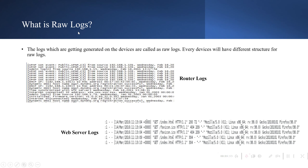Next, we need to understand what a raw log is. Raw logs are unstructured logs, meaning every device has its own log format. As shown in the examples below, the left-hand side image shows router logs with one structure, and below that you can see web server logs with a different structure.